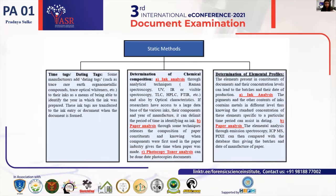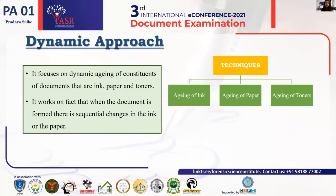The third static method is the determination of elemental profiles. Inks and paper are composed of elements — some in abundance and some in trace quantities — where the concentration is specific to a particular time period. Thus, knowing the elemental profiles and elemental concentrations helps in dating of documents. Moving to dynamic methods: dynamic methods focus on dating of documents through the aging process. We study the aging process of inks, paper, or toners to determine the date of production of the document.